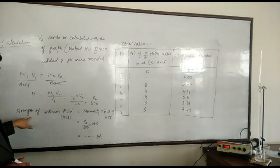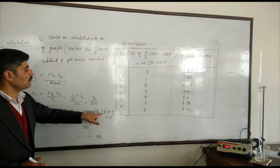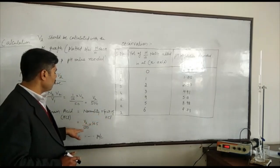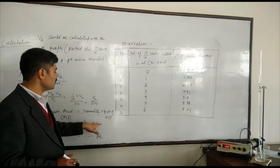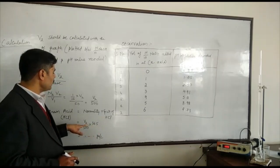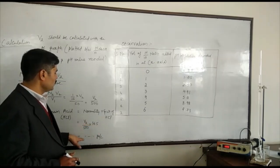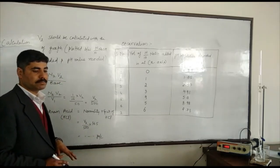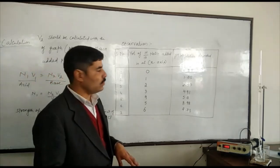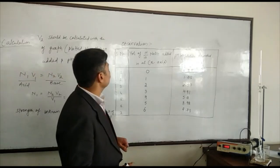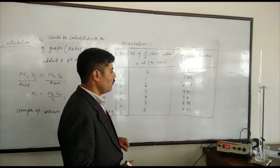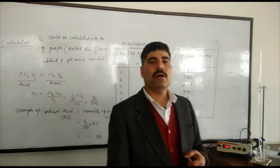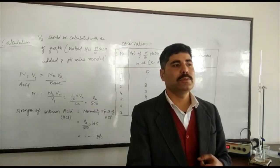The strength of the unknown acid equals normality multiplied by the equivalent weight of HCl. The normality is V₂/500, and the equivalent weight of HCl is 36.5. Multiplying these together gives us the strength of the unknown acid. This is the way to calculate the strength of an unknown acid with the help of a pH meter.